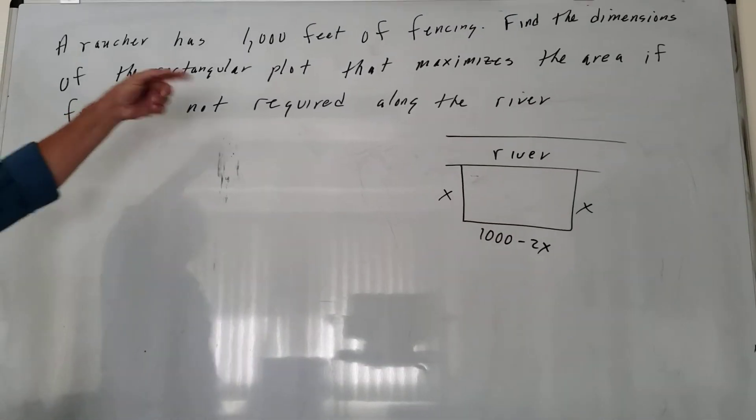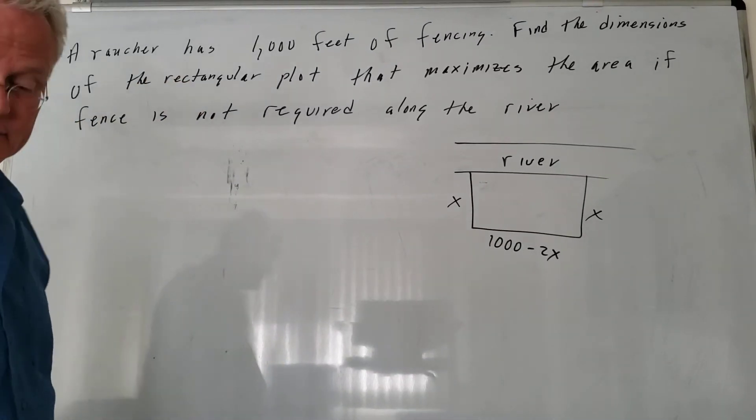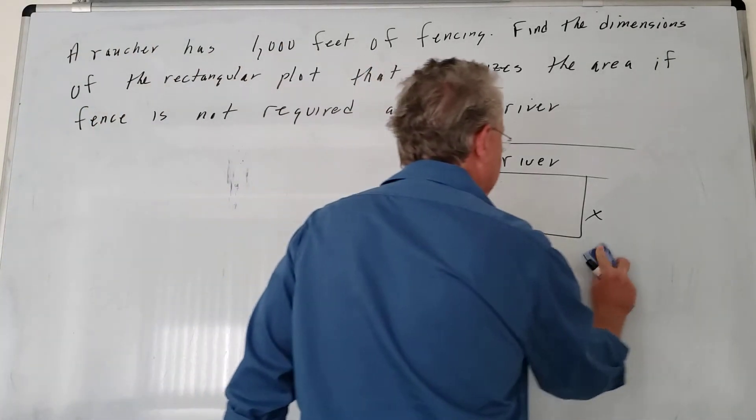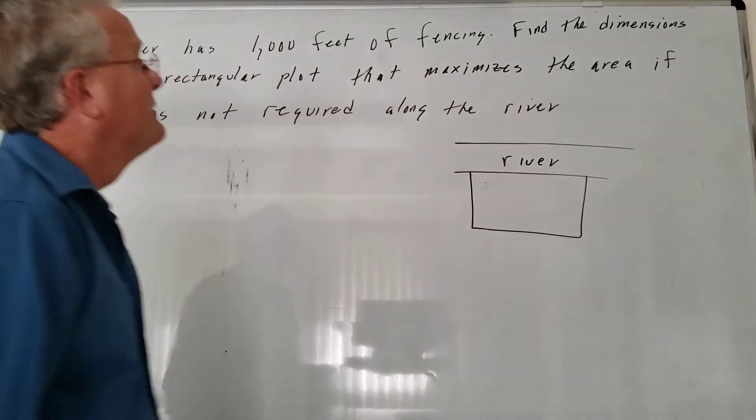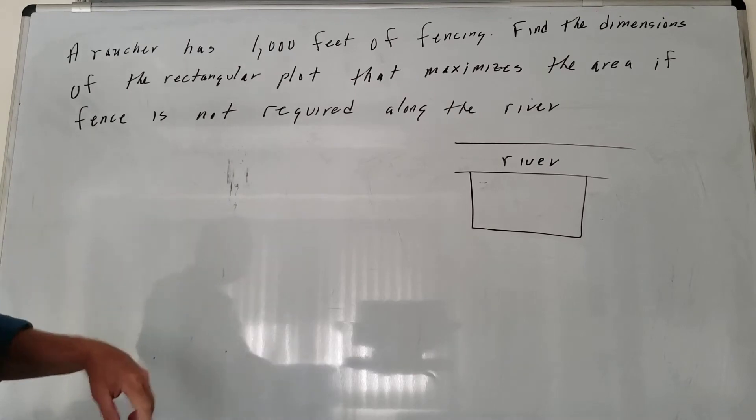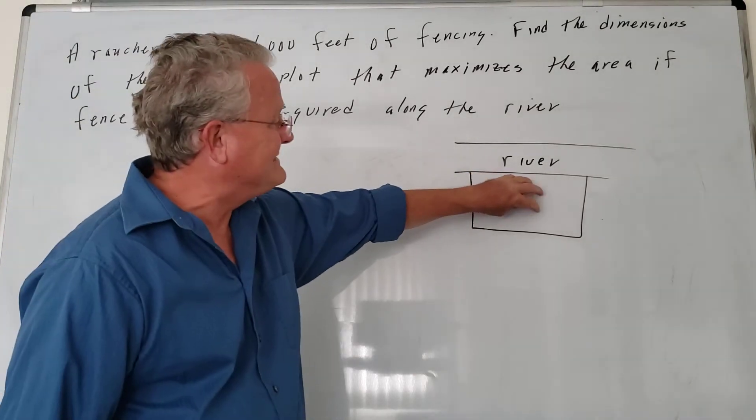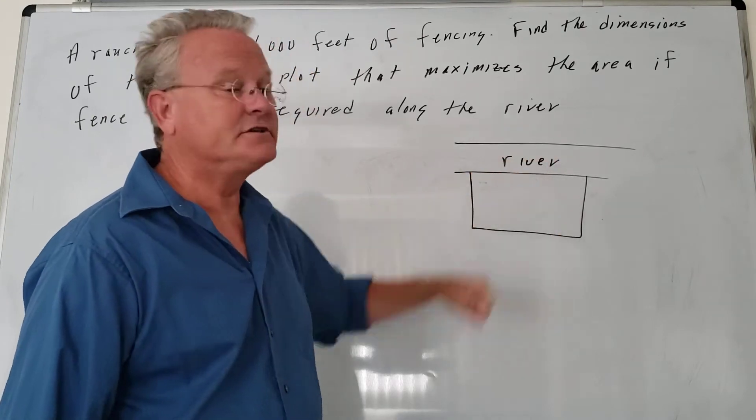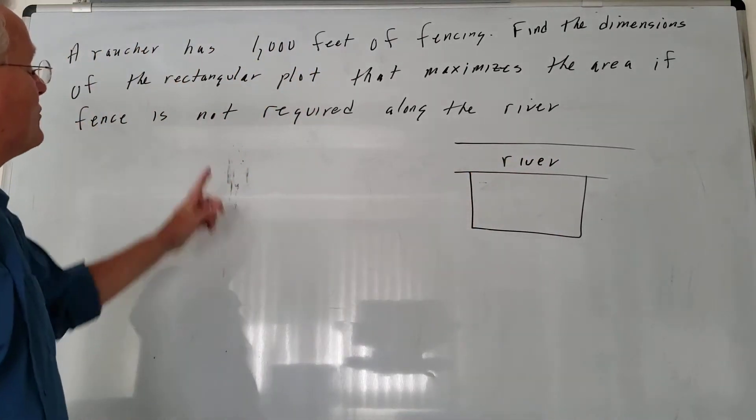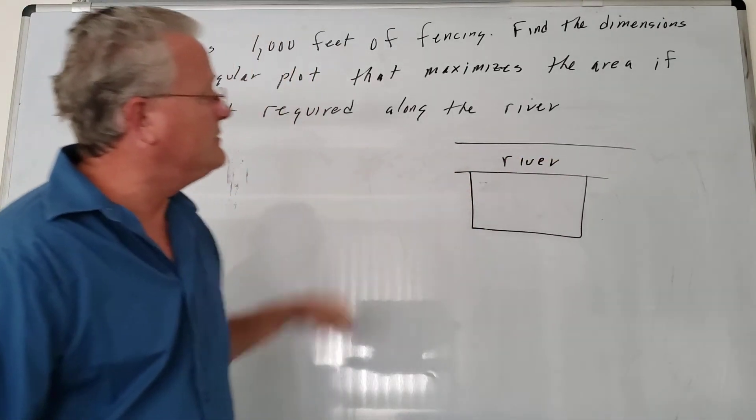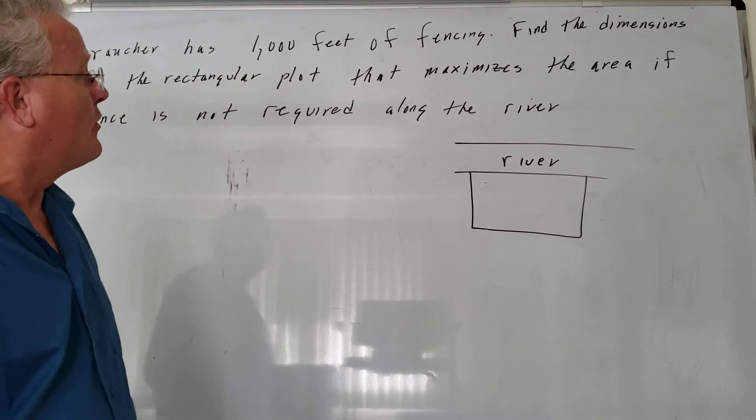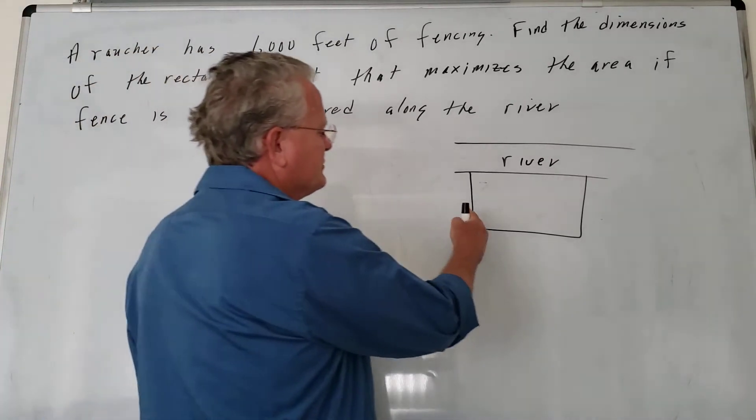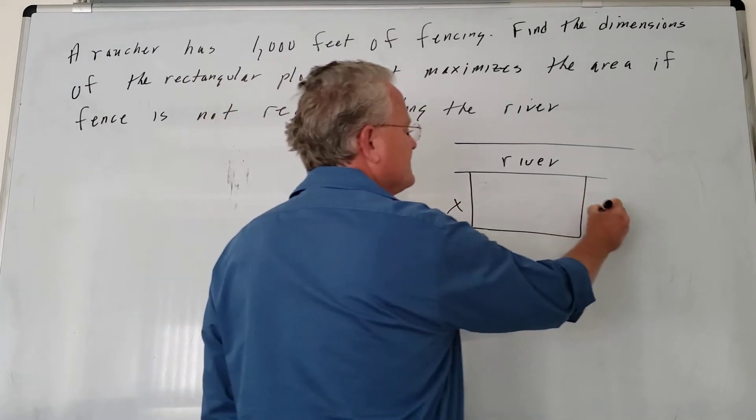We have a rancher with 1,000 feet of fencing, and we need to find the dimensions that will maximize the area after putting the fencing up. We're told that fencing is not required along the river. So what are the dimensions? We don't know what these distances are yet.